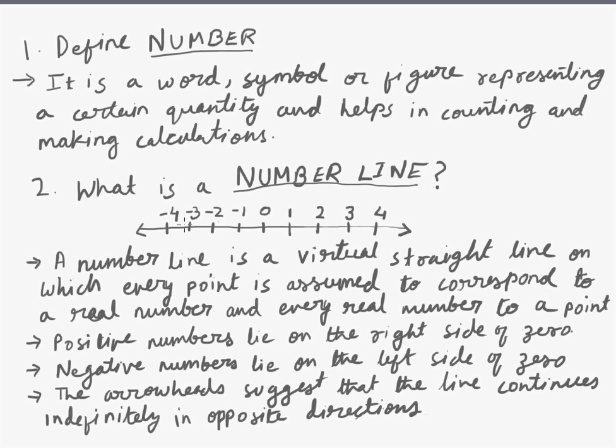As you can see, this is a number line on which there are certain positive numbers and certain negative numbers marked on it. In order to define number line, we can say that a number line is a virtual straight line.